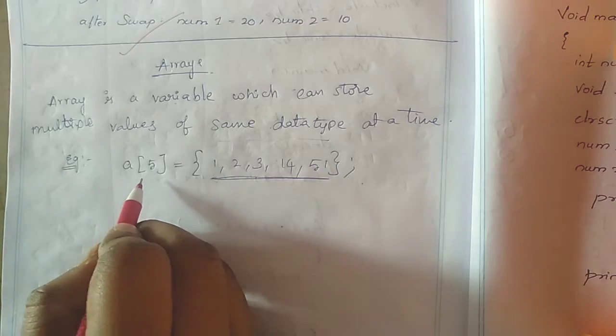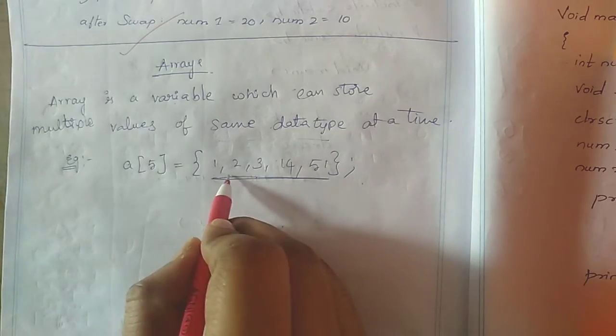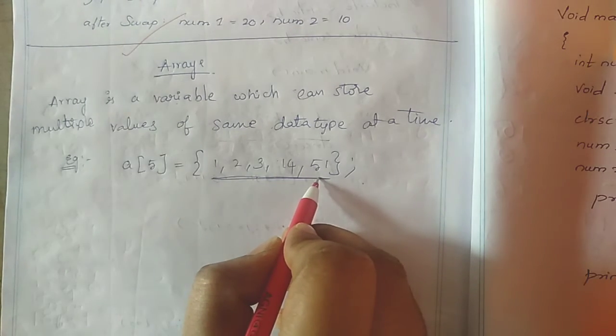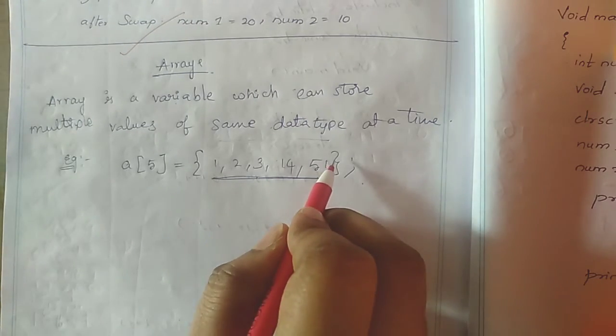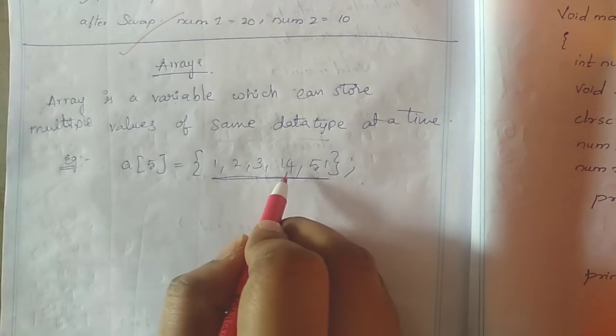An array can allow only the same type or similar type of data values. It cannot allow different data values.